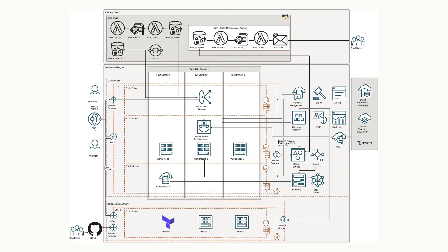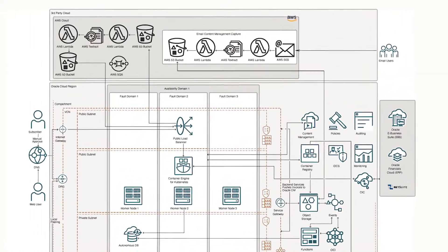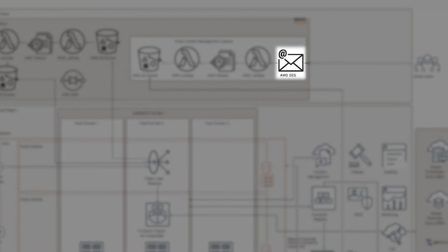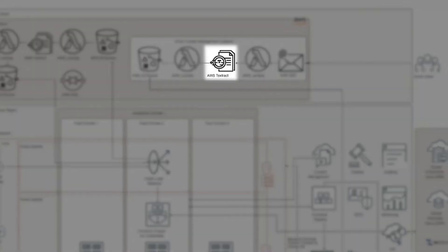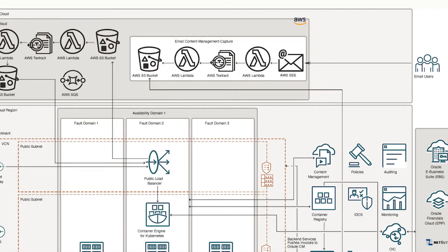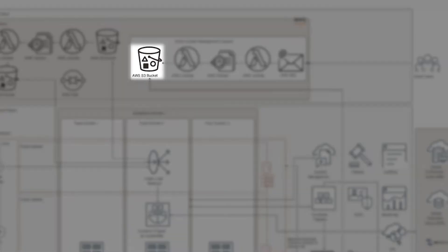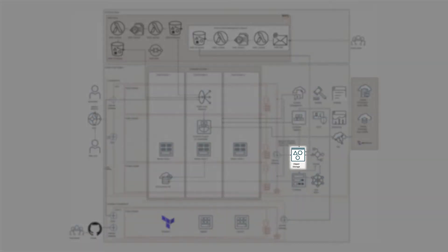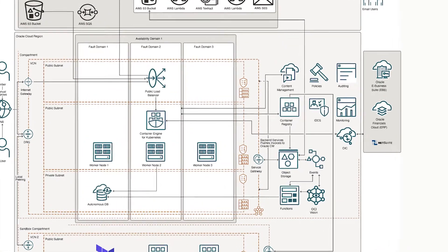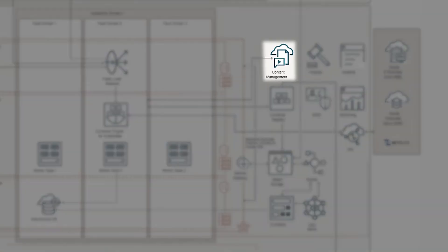Thanks, Avi. So, our users start the EasyCloud process when suppliers email in invoices to the EasyCloud system. The emails are collected by a process called AWS SDS, and that invokes a function in AWS Lambda. The function also calls the Textract service to extract invoice data and store it. The invoice data is passed from an AWS S3 bucket over to the OCI object storage.